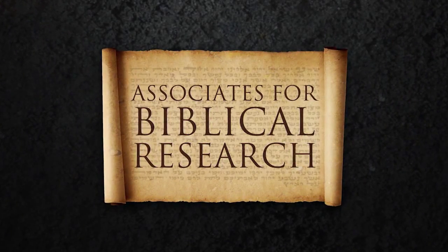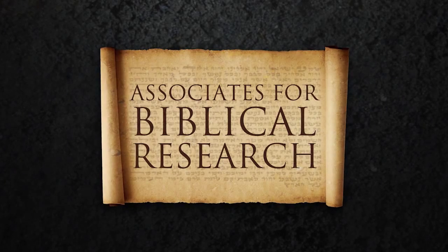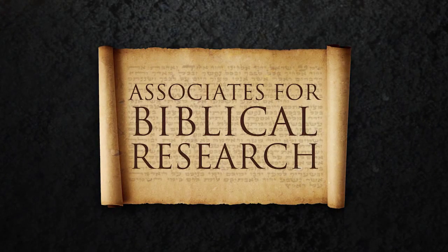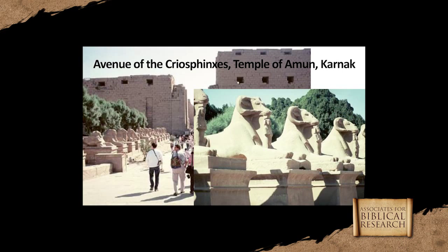The Egyptian god Amun was known for ram's horns — curly ram's horns. This is actually the Temple of Amun in Karnak, Egypt. Out front of the temple is an avenue of sphinxes, but they're called cryo-sphinxes because that's the Greek word for ram.